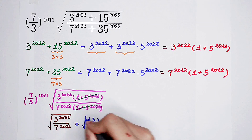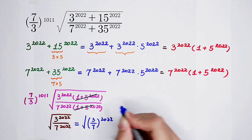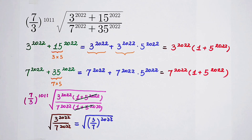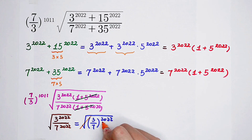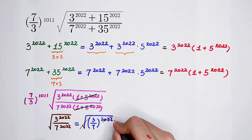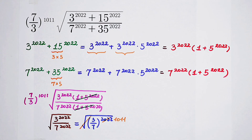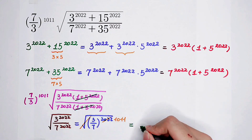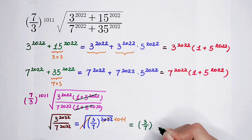Because taking the 2022 out — it appears inside the square root, and here is also a 2022 — so cancel, but it leaves 1011. So this is equal to 3 over 7, to the power of 1011.